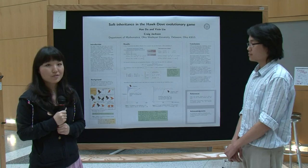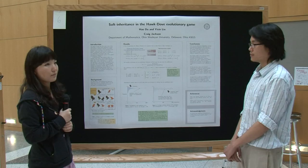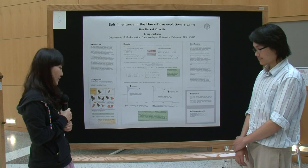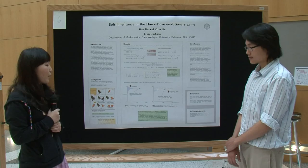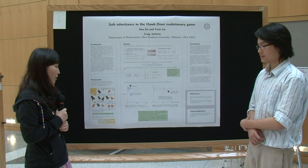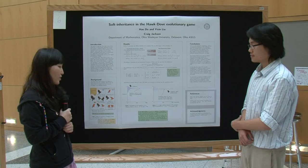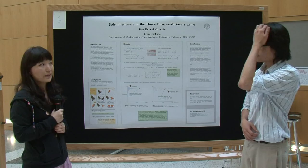This box indicates the expected payoff with two phenotypes. When hawk fights with hawk, they have a fifty percent chance of win or lose, so their expected payoff is the fitness value of the resource minus the cost of injury, divided by two. When hawks fight with doves, they share the resources and there are no injuries, so the payoff is V over two.